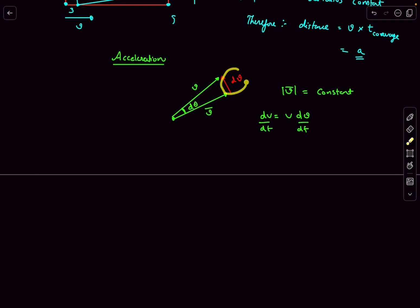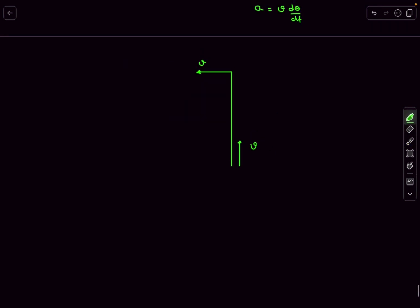Now let's determine the rate at which the velocity vector rotates. Consider particle 1 and particle 2. After time dt, particle 1 moves to a new position and particle 2 moves to a new position. The velocity vector of particle 2 is perpendicular to the line joining them; the angle dθ by which the velocity vector rotated is the same as the angle rotated by the position vector r.